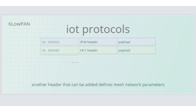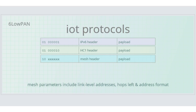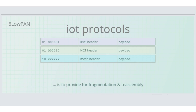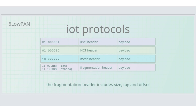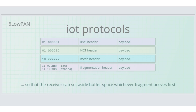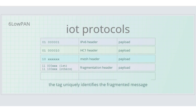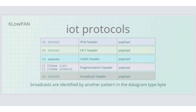Another header might be added to define mesh network parameters. More than one header may be applied in the prescribed order. Mesh parameters include link-level addresses, the number of hops left, and the address format. The solution to handle larger data units received from the IPv6 network is to provide for fragmentation and reassembly, hence the fragmentation header. The fragmentation header includes size, tag, and offset. The total size is transmitted with every fragment so that the receiver can set aside buffer space whichever fragment arrives first. The tag uniquely identifies the fragmented message. A further message type — the broadcast — is identified by another pattern in the datagram type byte.